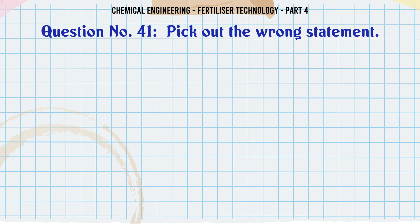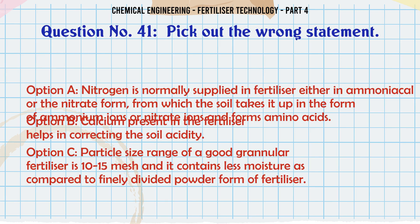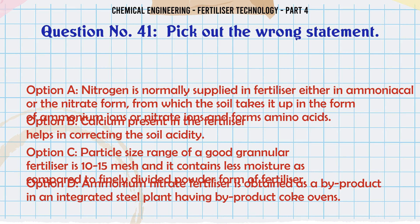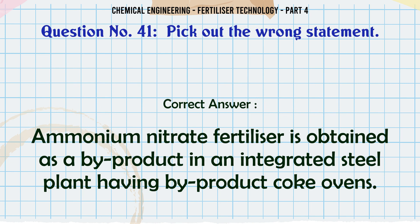Pick out the wrong statement: a. Nitrogen is normally supplied in fertilizer either in ammoniacal or the nitrate form, from which the soil takes it up in the form of ammonium ions or nitrate ions and forms amino acids. b. Calcium present in the fertilizer helps in correcting the soil acidity. c. Particle size range of a good granular fertilizer is 10-15 mesh and it contains less moisture compared to finely divided powder form. d. Ammonium nitrate fertilizer is obtained as a by-product in an integrated steel plant having by-product coke ovens. The correct answer is: d — ammonium nitrate fertilizer is obtained as a by-product in an integrated steel plant having by-product coke ovens.